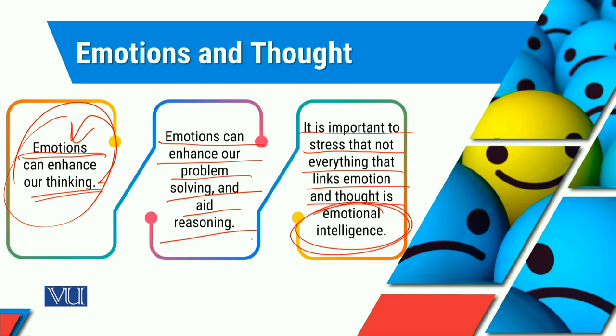When we talk about emotional intelligence, we are talking about self-awareness, self-control, empathy, motivation, and social intelligence. But emotions are not only elaborated in these five things. There are so many other feelings, thoughts, and intuitions which prevail as far as our emotions are concerned. No doubt we are emotionally intelligent, but we need to understand the list of positive and negative emotions.